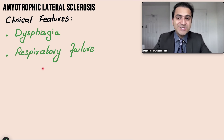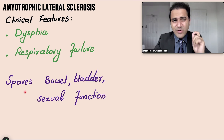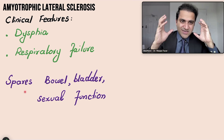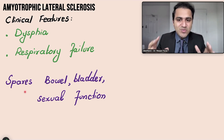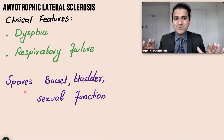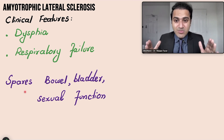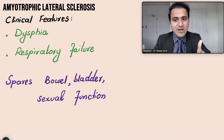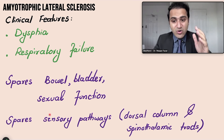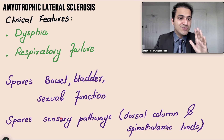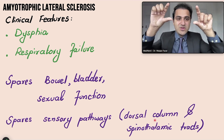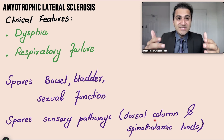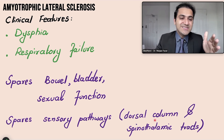Pseudobulbar palsy is an upper motor neuron sign; bulbar palsy is a lower motor neuron sign. Slowly and gradually these patients experience dysphagia and respiratory failure. A very important exam point: ALS spares the bowel, bladder, and sexual function — if a clinical scenario shows upper and lower motor neuron signs but spared bowel, bladder, and sexual function, click ALS. ALS also spares the sensory pathways — patients will not have sensory complaints — because it spares the dorsal columns and spinothalamic tract, mainly affecting the anterior aspect of the spinal cord. That is why it is also called motor neuron disease.